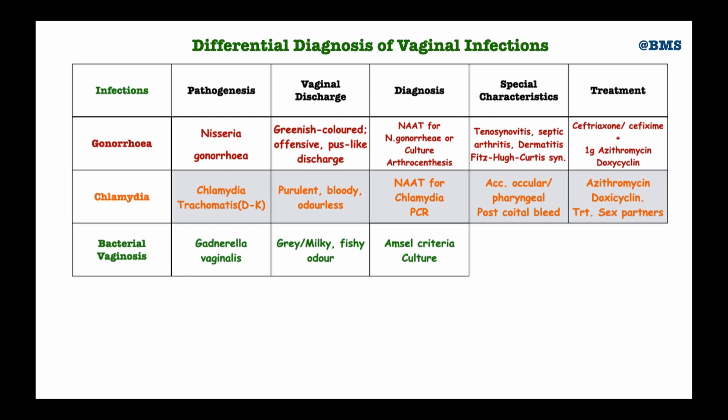The Amsel criteria requires the presence of more than 20% clue cells, a thin white homogeneous discharge coating the walls of the vagina, the presence of an amine odor intensified when 10% potassium hydroxide is added, and a vaginal pH greater than 4.5. Culture can also be used to isolate Gardnerella vaginalis. The special characteristics include a clue cell count greater than 20% and a positive whiff test — adding 10% potassium hydroxide intensifies the fishy odor, and pH is greater than 4.5.